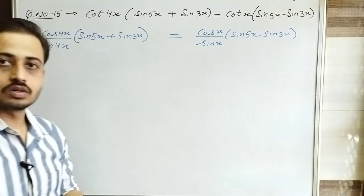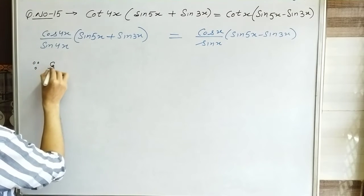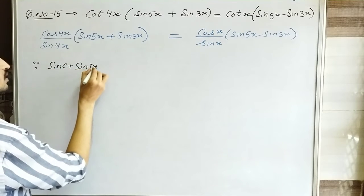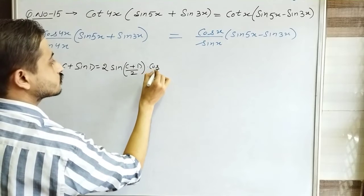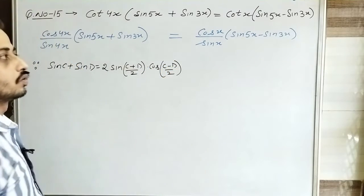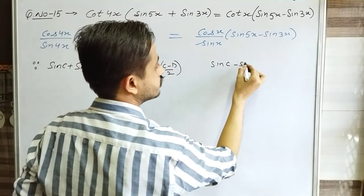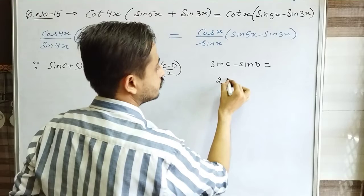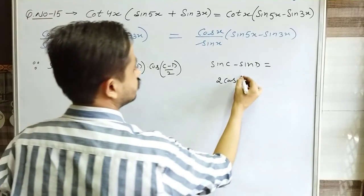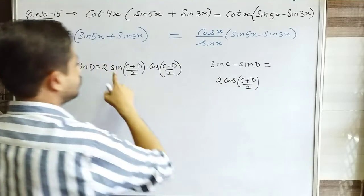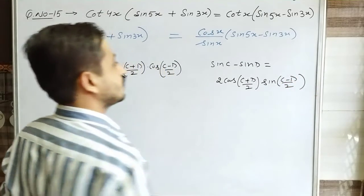Now I will solve both sides. On the left, sinC + sinD = 2sin((C+D)/2) · cos((C-D)/2). On the right, the identity for sinC - sinD applies: sinC - sinD = 2cos((C+D)/2) · sin((C-D)/2). Here sin goes to cos position and cos goes to sin position.